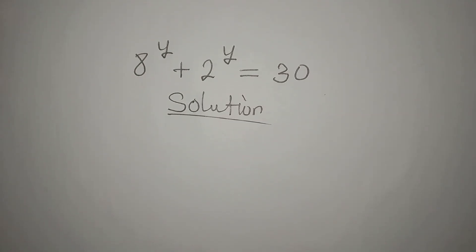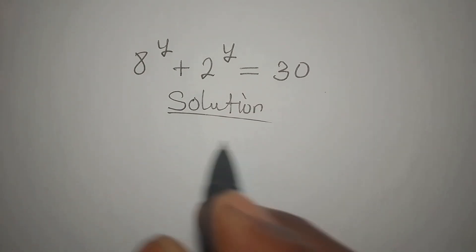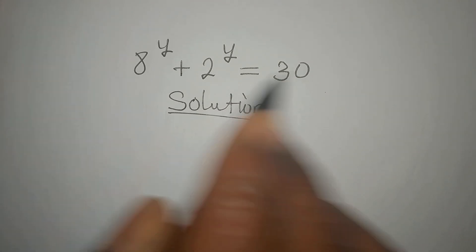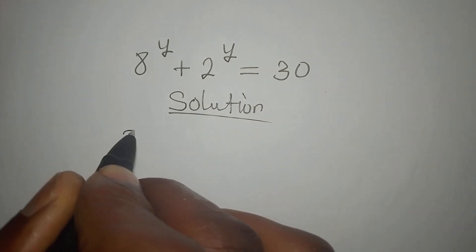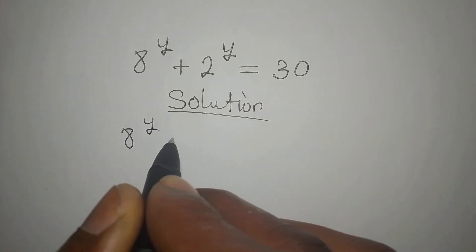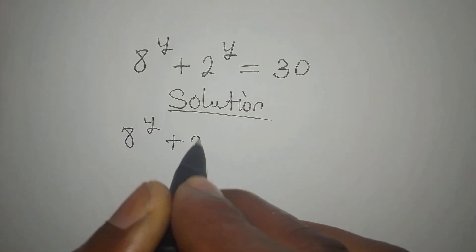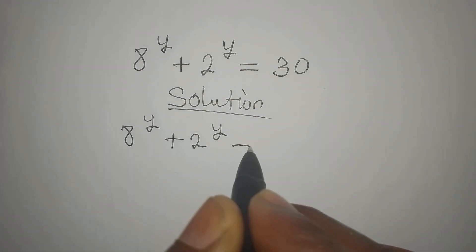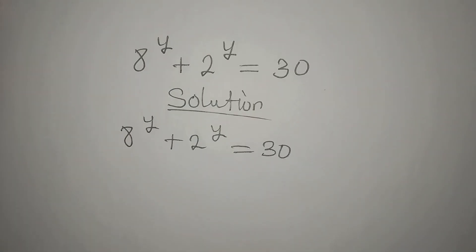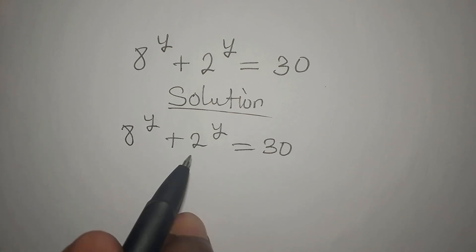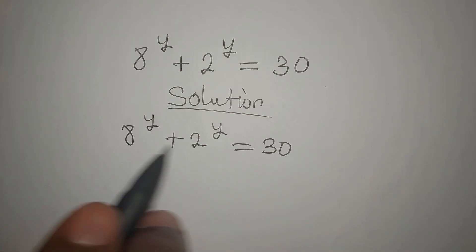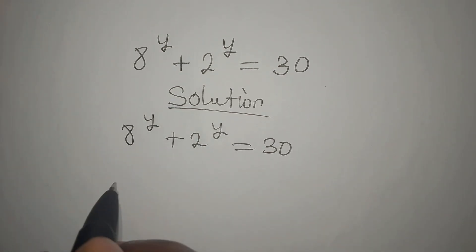Hello everyone, let's provide a solution to this problem. We have 8 to the power of y plus 2 to the power of y equals 30. Before I proceed, I would like to express this in the same base.